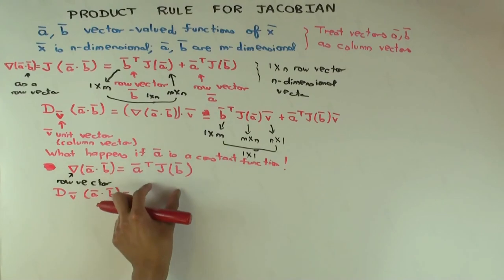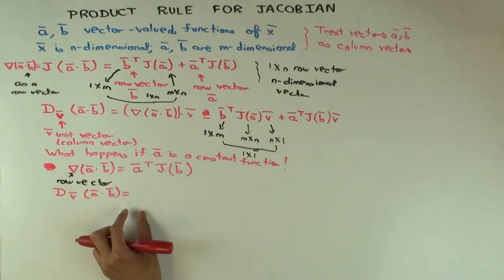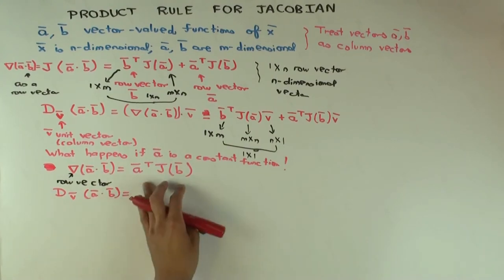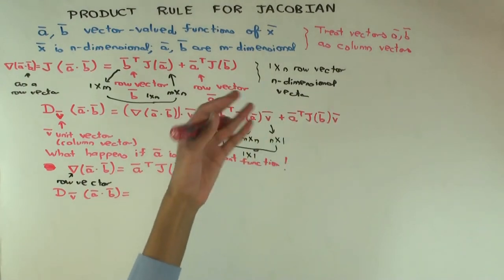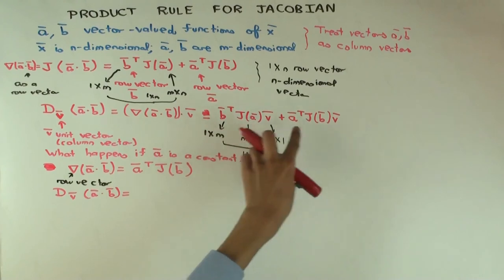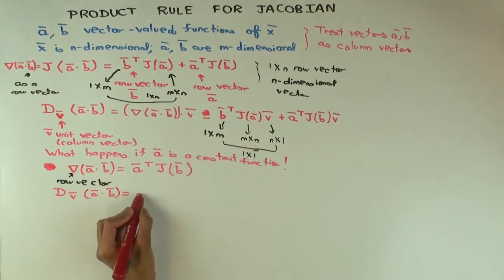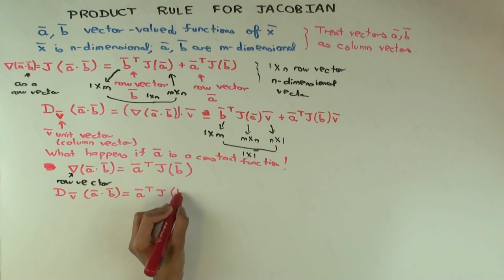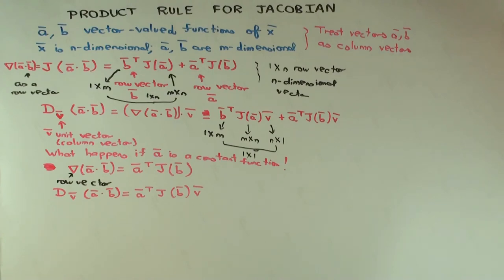And so what is D_v of a dot b if a is constant? We cannot quite pull a out because this is a dot, so we have to just look. We can pull the constant entry of a out. Well, you could do that, but we've already done our work here. If you have to derive this from scratch, that's how you do it. But we've already done our work here. This one will not be there, so it will just be a transpose J_b v. If you actually wanted to prove this formula, you would do it the way you're saying.